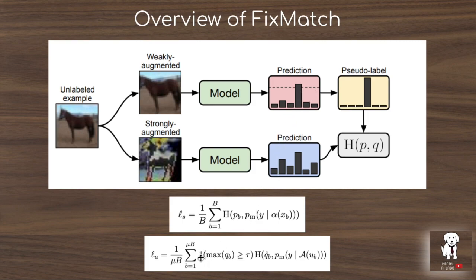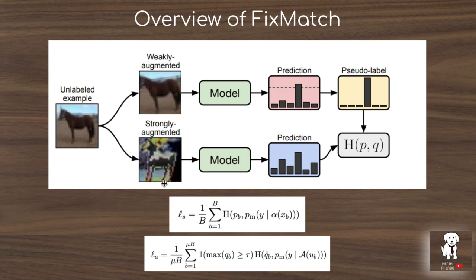Otherwise, if it doesn't exceed the threshold, it's set to zero and this loss doesn't contribute at all to the update. If the prediction does exceed the threshold, you convert it into a pseudo-label or a one-hot encoded vector. They're specifically training on one-hot encoded vectors — like 0,0,0,1,0,0 — rather than trying to predict the soft label distribution over all classes. Then they take the cross-entropy loss of the model's predictions on the strongly augmented image, which is augmented with a more intense algorithm like RAND augment or CT augment — a pipeline of meta-learning data augmentation algorithms like AutoAugment and population-based augmentation — and compare that with the pseudo-label from the weakly augmented image.